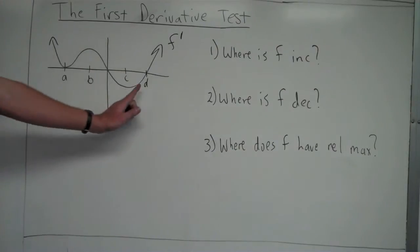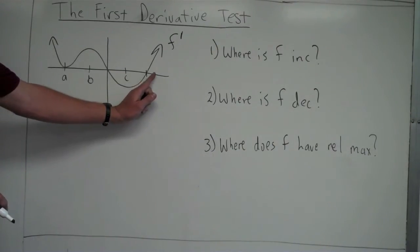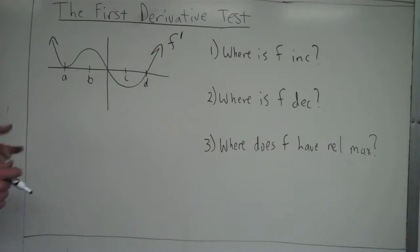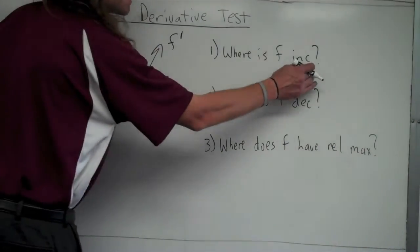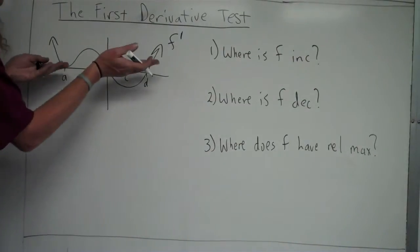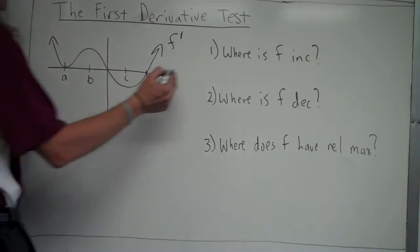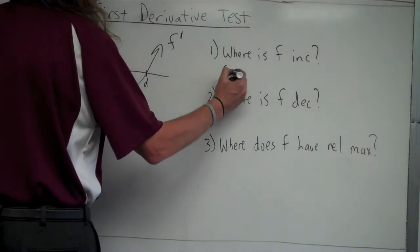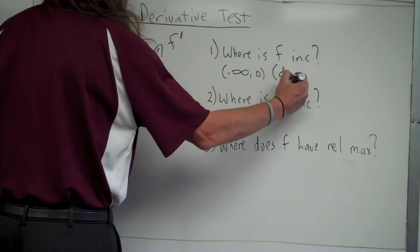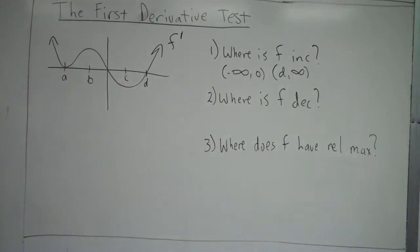I forgot to label this — there should be a d right there. After d, f prime is again positive. So the key: f is increasing when f prime is greater than zero, and f prime is greater than zero when it's above the x-axis. The answer is from negative infinity to zero, and from d to infinity.